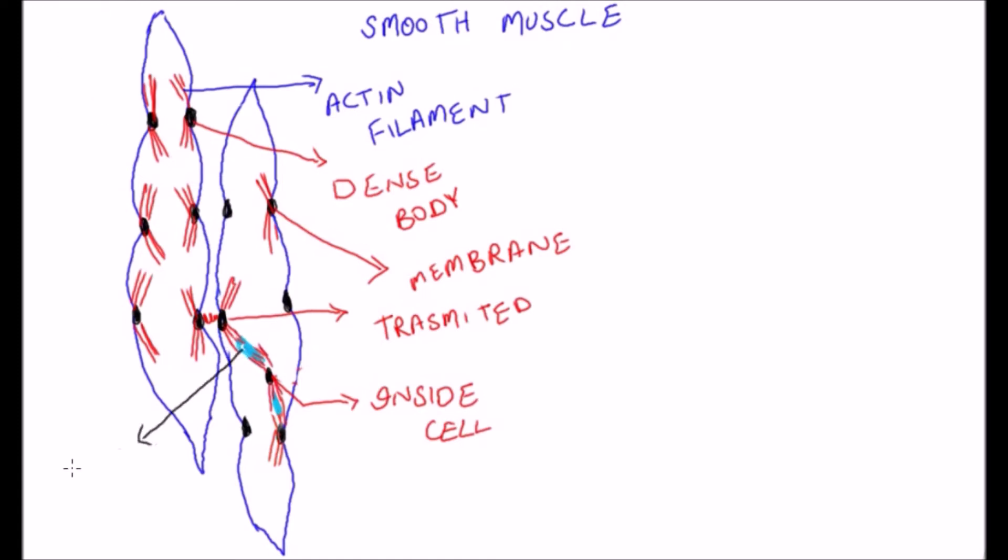Interspersed among the actin filaments in muscle fiber are myosin filaments. These filaments have a diameter more than twice that of the actin filaments. The dense bodies of smooth muscle serve the same role as the Z-discs in skeletal muscle.